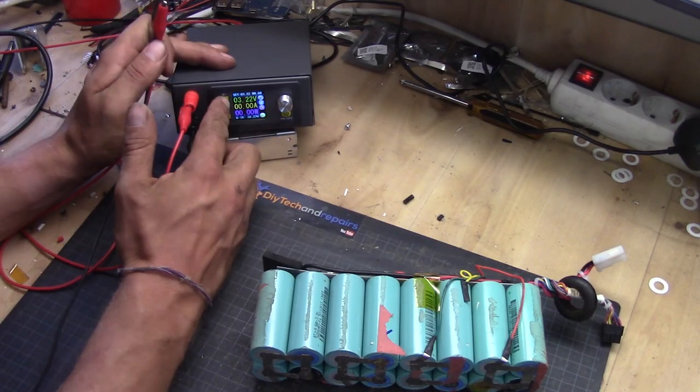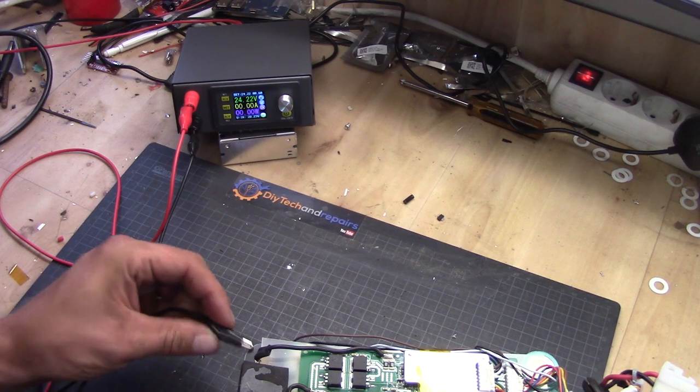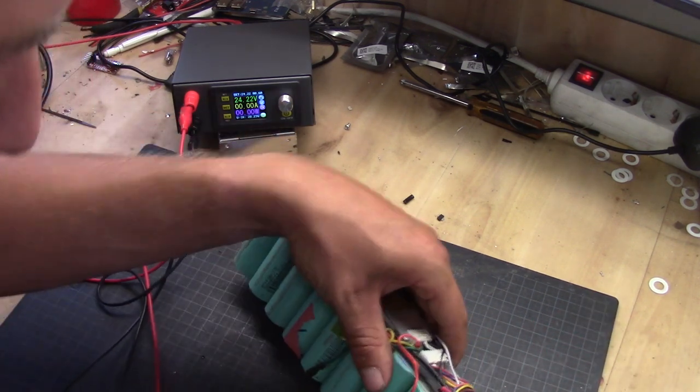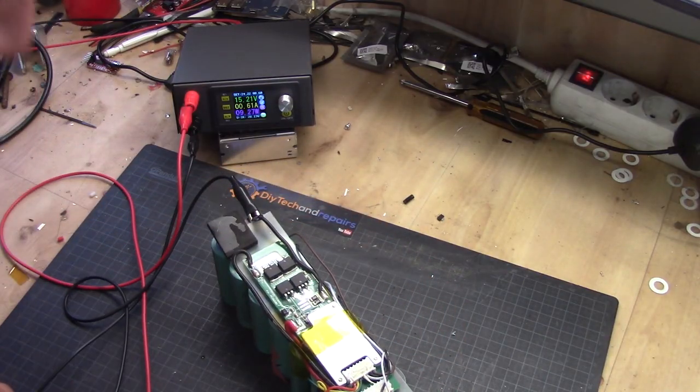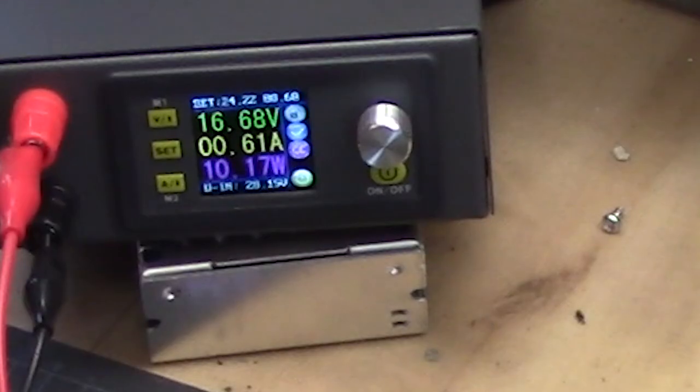So we set this up again. 24 volt. So we basically have the negative side here. And we have the positive side on this end here. And we can see that the voltage is slowly raising.